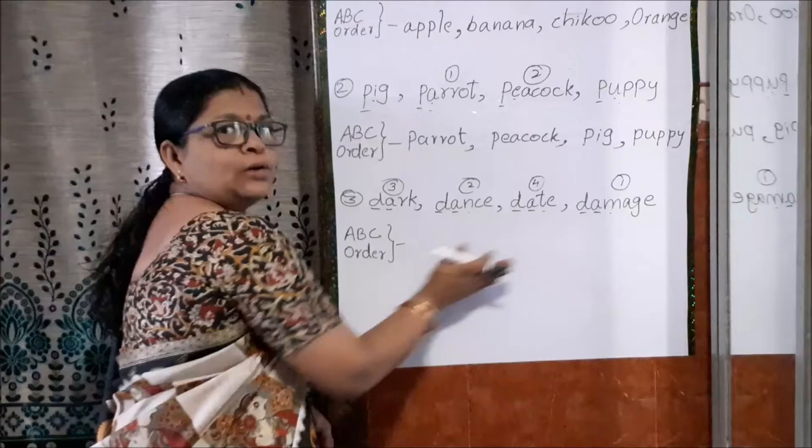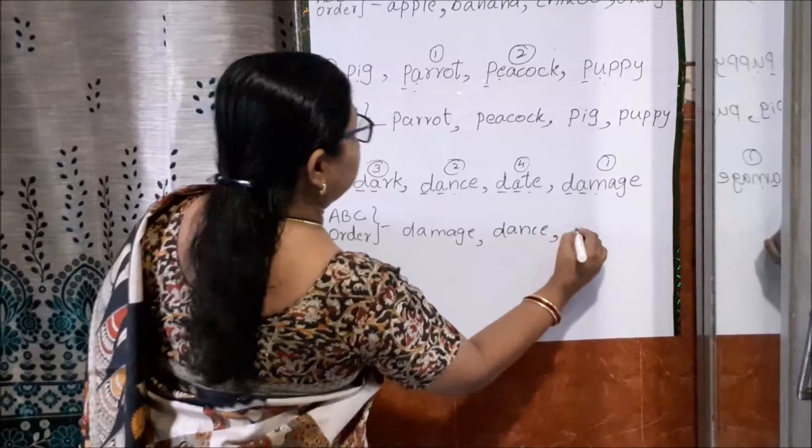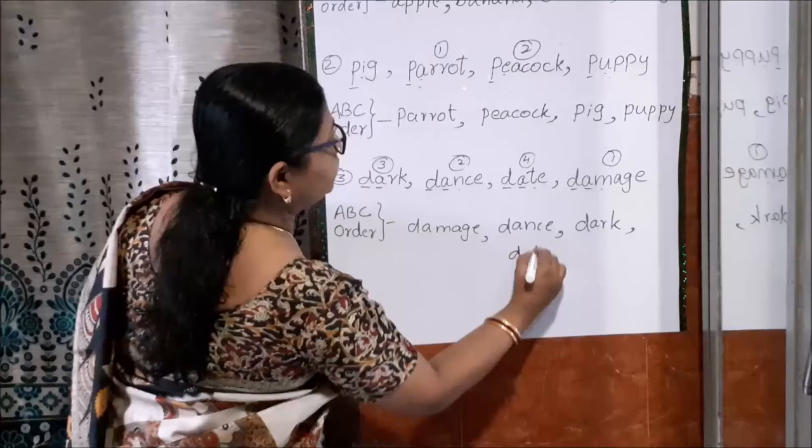So let me write here. First is damage. Second, dance. Third, dark. And then last is date. Got it? So this is how the words are arranged in dictionary also. Thank you.